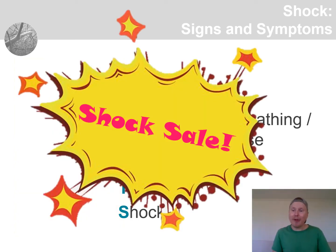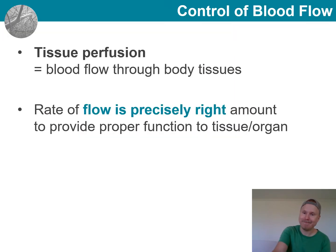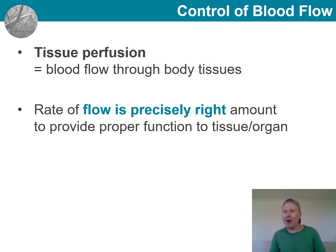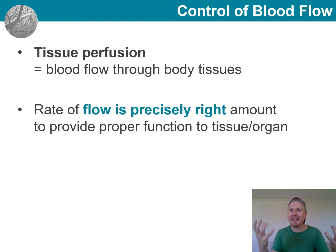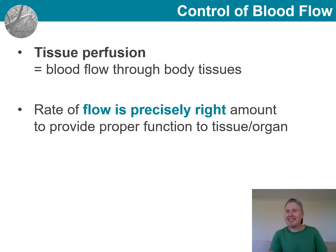One common cause for going into shock is a loss of a large amount of blood. Now let's shift our focus to how we control blood flow in the body. The flow is constantly controlled and adjusted so that the rate of flow is exactly correct for the particular organ or structure and its needs. There are extrinsic and intrinsic controls that play a role.